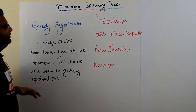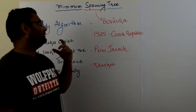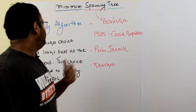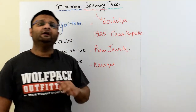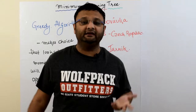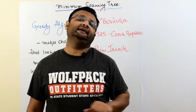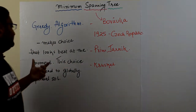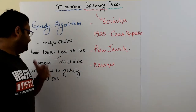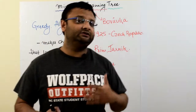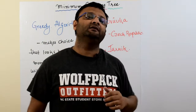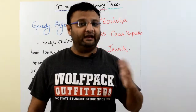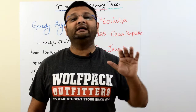First, the paradigm: all three algorithms we're going to discuss operate on a programming paradigm called the greedy approach. It's very simple — any algorithm based on the greedy paradigm makes a choice that looks best at the moment, thinking that by making the best possible choice at every state, it will ultimately lead to a globally optimal solution.